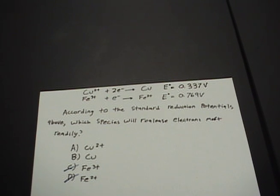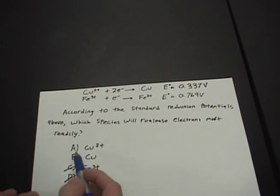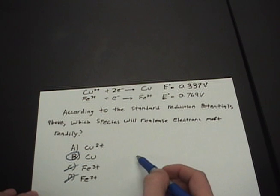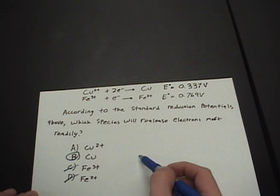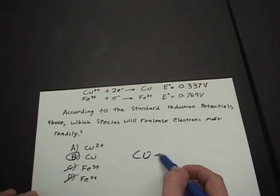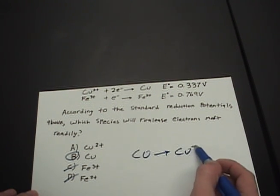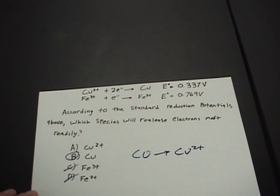If copper is being oxidized, which one is more positive? Copper 2 positive. So the answer is B, because it makes sense for copper to go from Cu to Cu 2 positive when being oxidized.